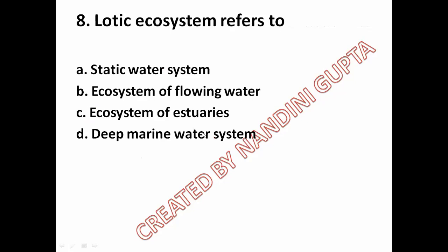Next: lotic ecosystem refers to option A static water system, option B ecosystem of flowing water, option C ecosystem of estuaries, option D deep marine water system. We have seen the types of ecosystem including freshwater and marine ecosystems. Lotic ecosystem relates to flowing water.